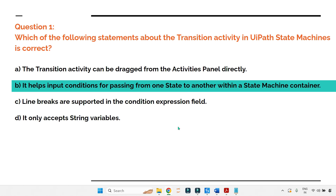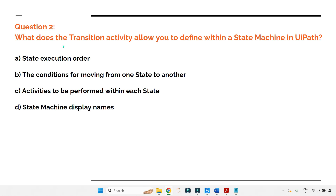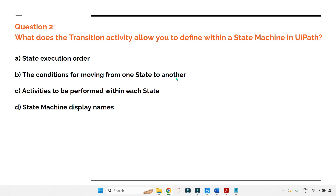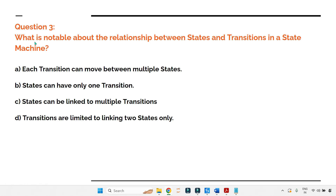Question two: what does the transition activity allow you to define within a state machine in UiPath? Options: A — state execution order; B — the conditions for moving from one state to another; C — activities to be performed within each state; D — state machine display names. Please comment your answer. The answer is B: the conditions for moving from one state to another.